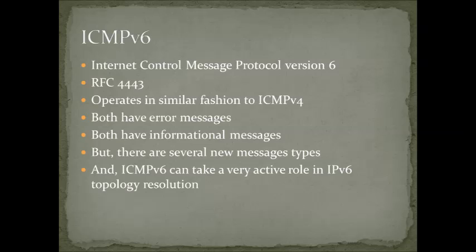ICMPv6 is very similar to ICMPv4. They both have informational messages, and they both have error messages. If you want to do some really in-depth reading about ICMPv6, you can find it in RFC 4443, or you can take a look at Chapter 8 in the Packet Guide to Core Network Protocols. Now, there are a couple of differences between ICMPv4 and ICMPv6 — most notably that ICMPv6 takes a much more active role in topology and discovery. Our focus today is going to be the neighbor solicitation and the router solicitation processes.